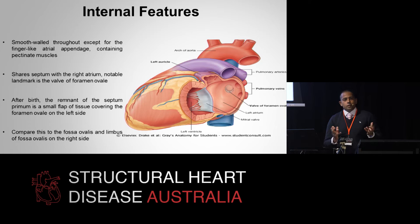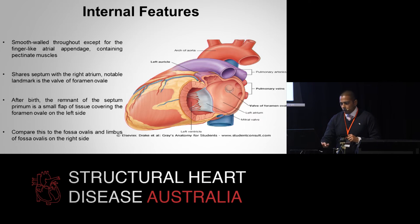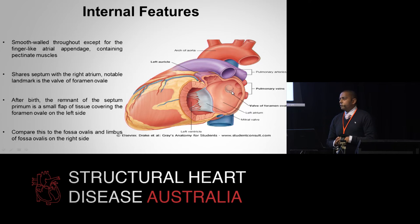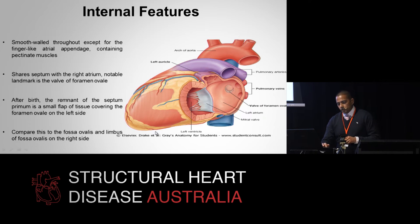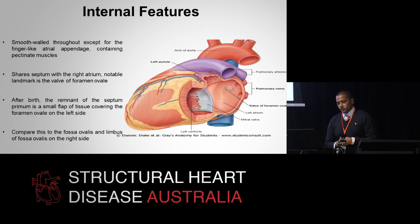The left atrium shares the septum with the right atrium. A notable landmark on the left atrial side is the valve of the foramen ovale, which is the remnant of the septum primum. After birth, it is this small flap of tissue derived from the septum primum that covers the foramen ovale on the left side.